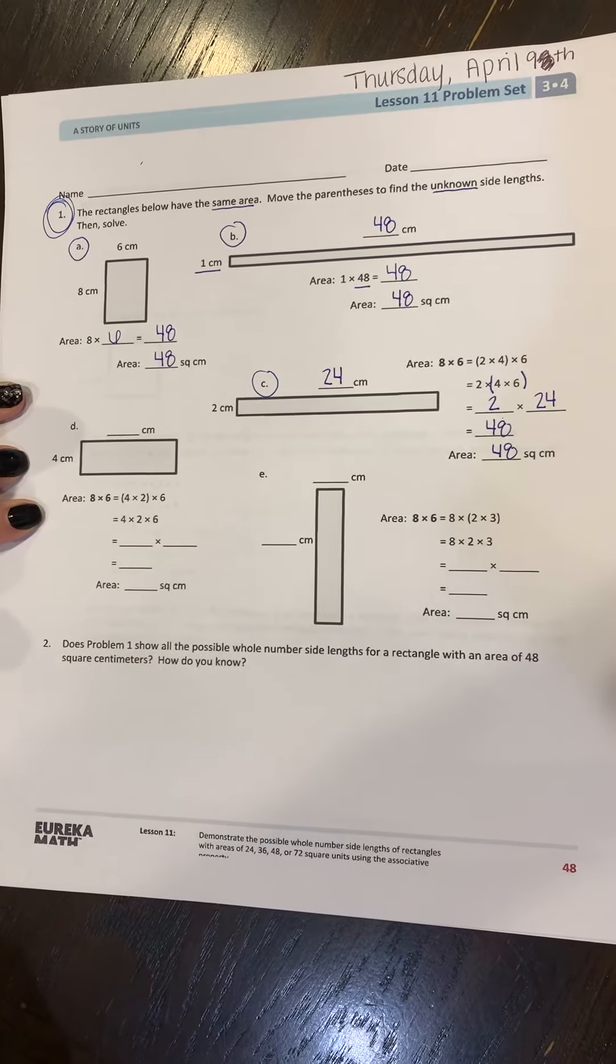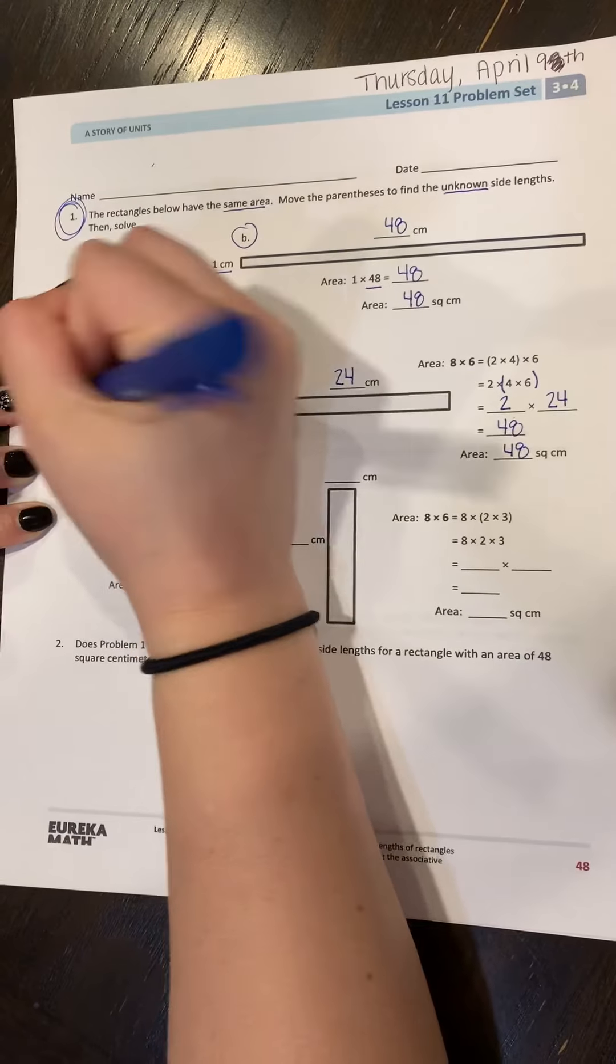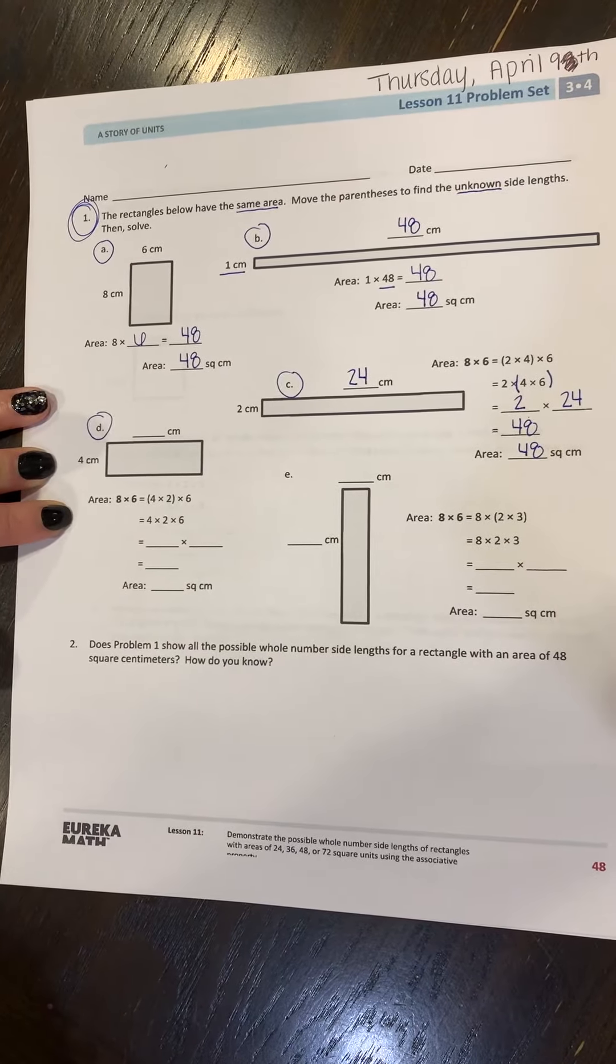And while I'm thinking about it, let's just go ahead and do one more because I think that this is a little bit more challenging of a lesson. So let's go ahead and do D. So remember the total area is eight times six, which we already know is 48.